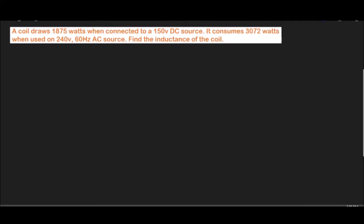We have another problem. A coil draws 1875 watts when connected to a 150 volt DC source. It consumes 3072 watts when used on a 240 volts, 60 hertz source. We need to find the inductance of the coil. Here is our solution.